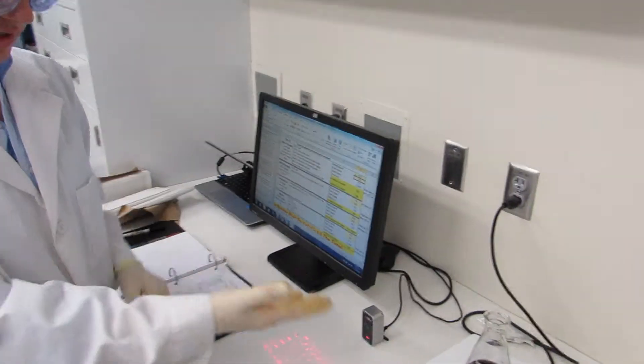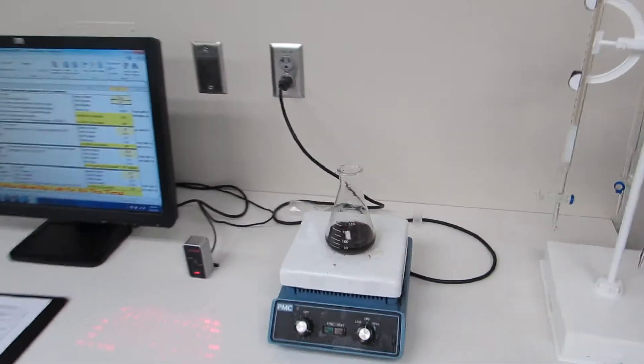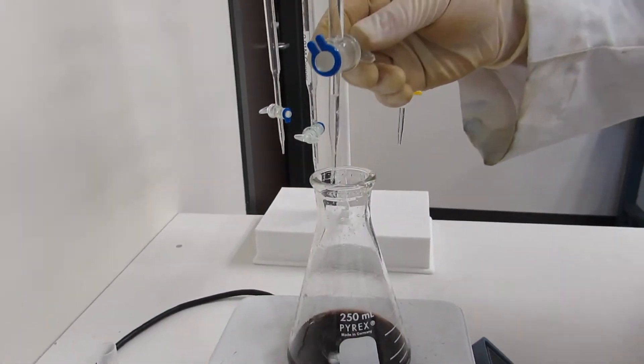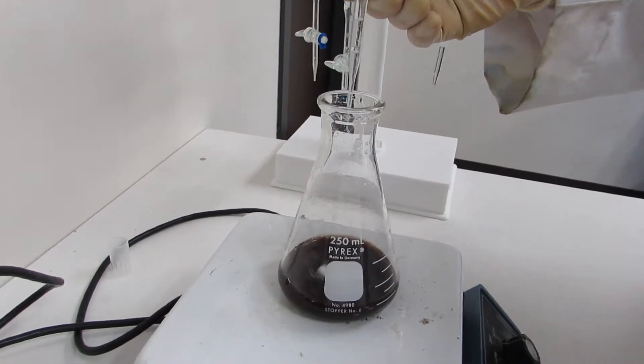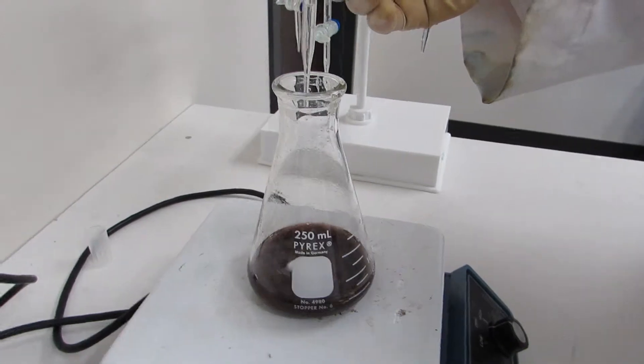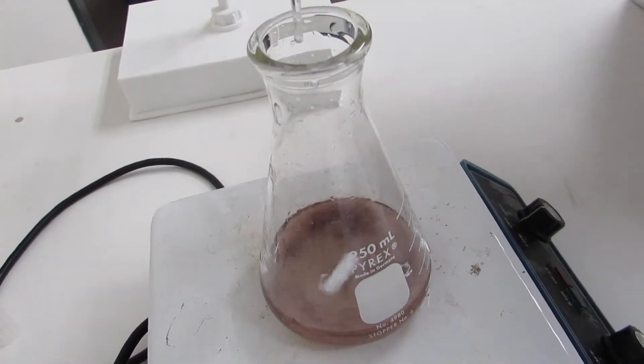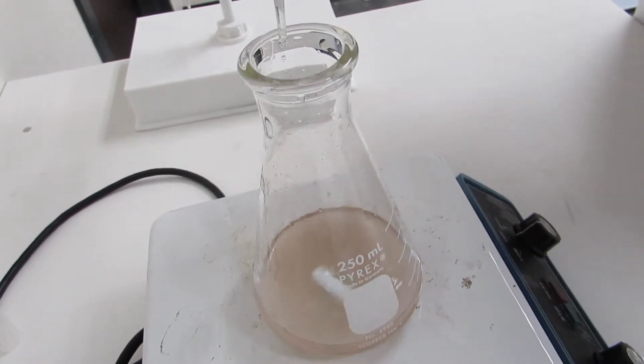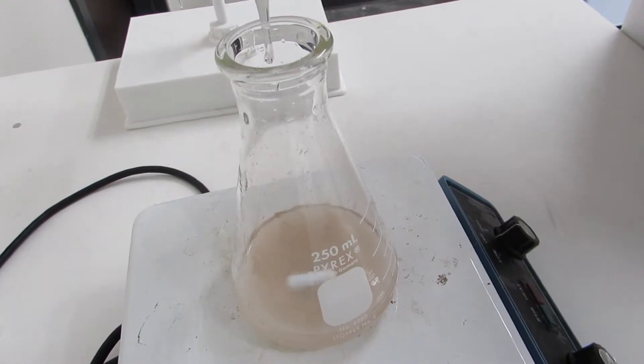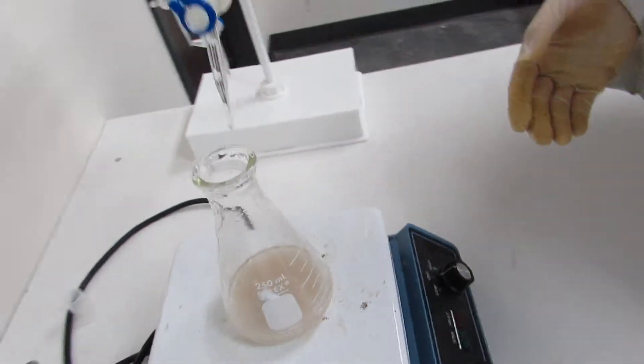Now we have to finish titrating this time for a white solution. Again you want to add very little at a time because the solution changes extremely quickly. You can see it changing to white. A little bit more maybe. There it goes. We now have a white solution.